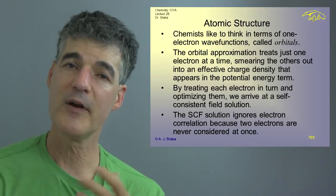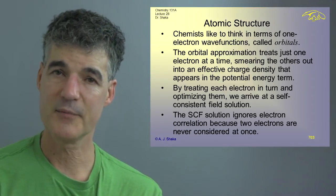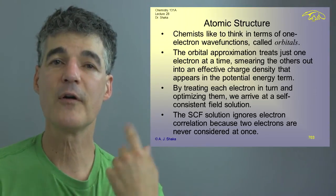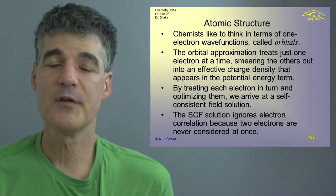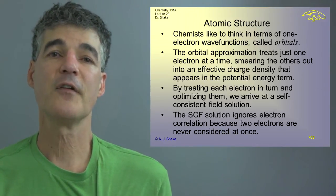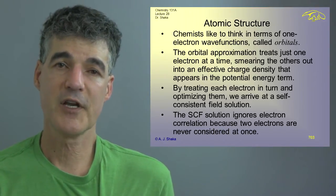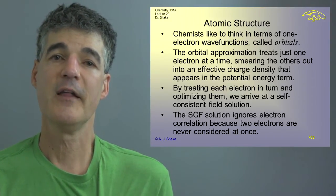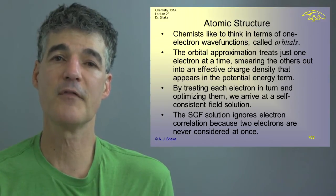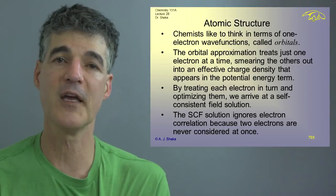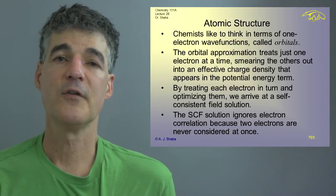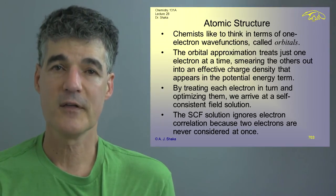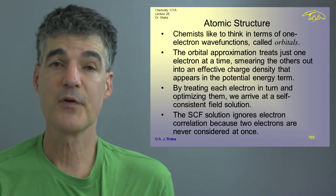And then we put that one into the soup and smear it out. And we grab another electron out of the hat. And we keep going around and around and around on a computer usually until none of the electron wave functions change. None of the one electron orbitals change from one to another. And then in that case you can't improve it because if none of them change, none of them are going to change if you go through again either. And so at that point you quit and you say you've got a self-consistent field solution.